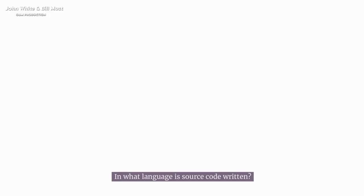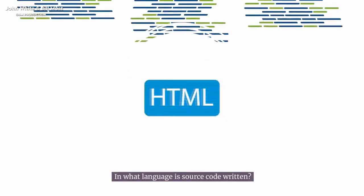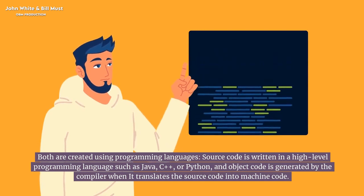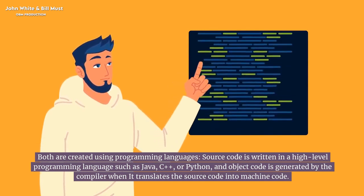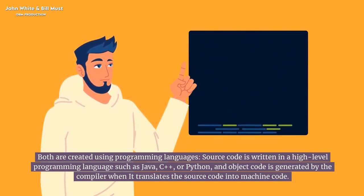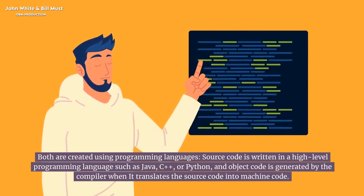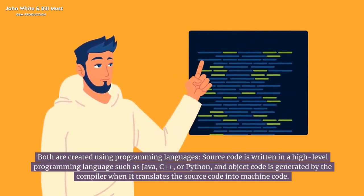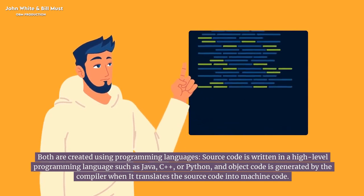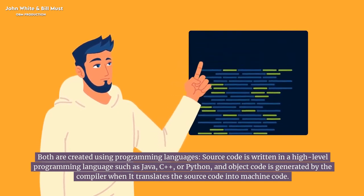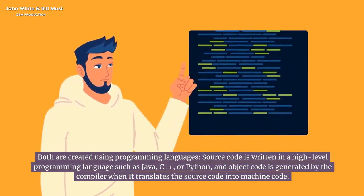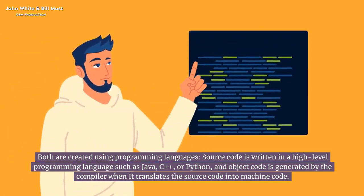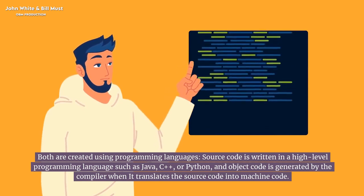In what language is source code written? Both are created using programming languages. Source code is written in a high-level programming language such as Java, C++, or Python. Object code is generated by the compiler when it translates the source code into machine code.